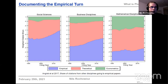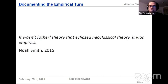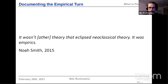This was the story within economics, but also in interaction with other social sciences: the share of empirical papers cited by other social sciences has gone up substantially in the last 10-20 years, and business disciplines rely much more on the empirical work of economists than on theoretical work. This has led some commentators, most famously Noah Smith, to the conclusion that it wasn't other theory that eclipsed neoclassical theory — it was empirics. The implicit argument is that economics has fundamentally changed, and the pluralist criticism may no longer be so relevant.